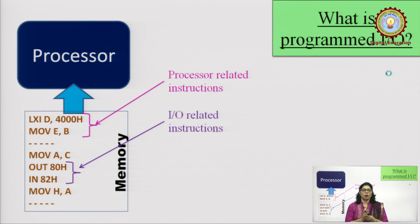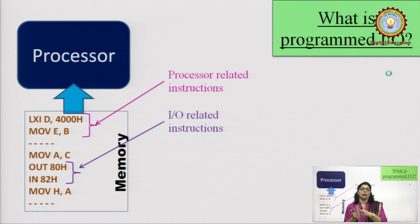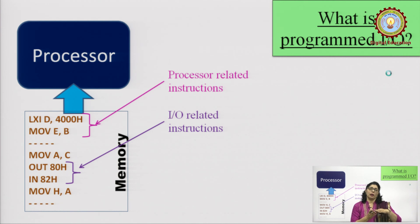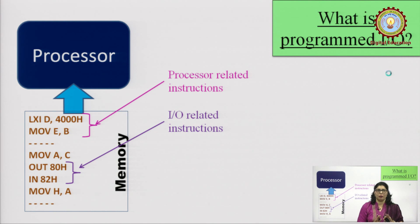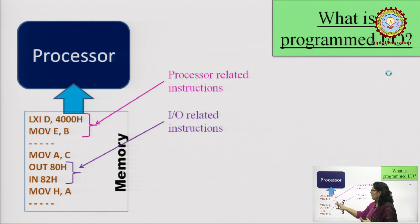With programmed I/O, we clarify how the microprocessor interfaces with the outside world — what input is coming from the sensor, how to perform calculations accordingly, and where and how to give the output. I have written a sample code here — there is one sample calculation, one instruction which is being executed.